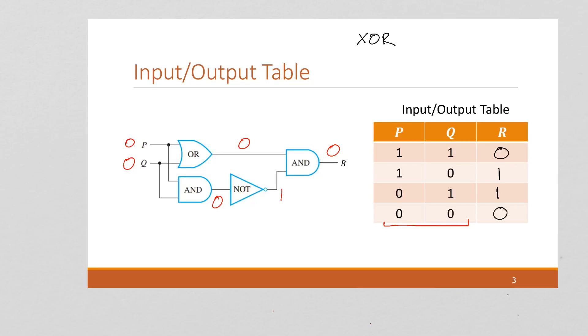So an XOR, which is not really something we cover in this class because we just barely touch on circuits, is only true if exactly one of the inputs is true. So this is the input-output table for an XOR circuit.